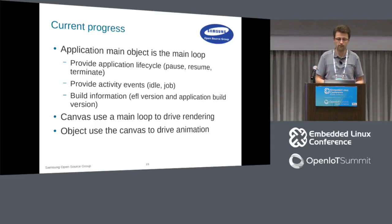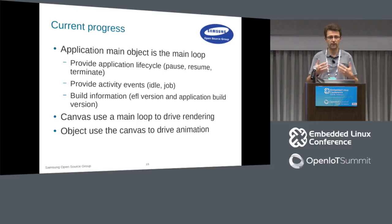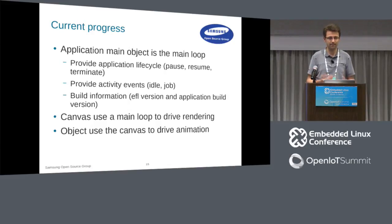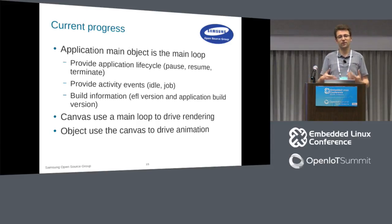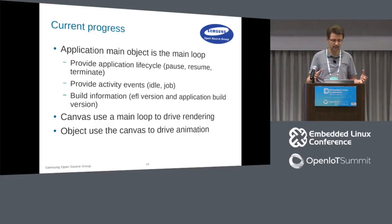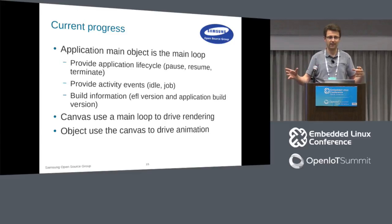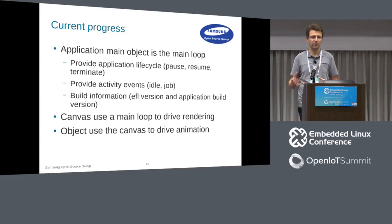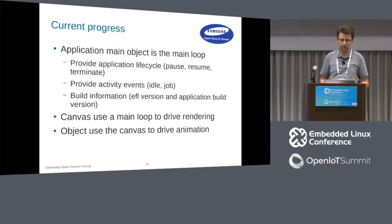The main loop is core to all event driving in your application. It provides information on when the main loop is idle, enables asynchronous job scheduling. To address bug compatibility, you specify not just which EFL version you built with, but which version you developed with — and the system configures itself to be as bug-compatible as possible with that EFL version.